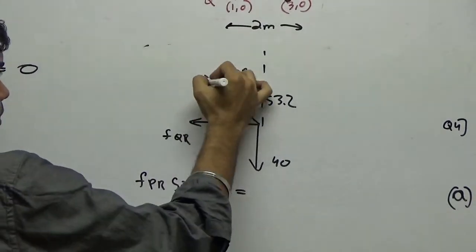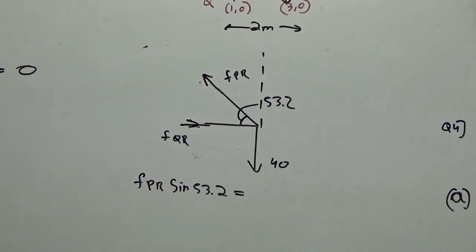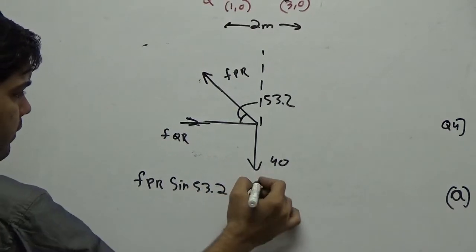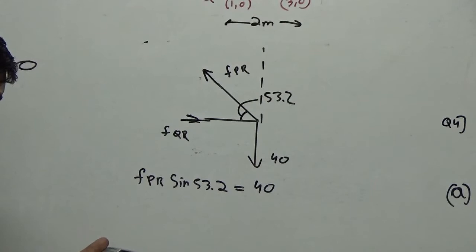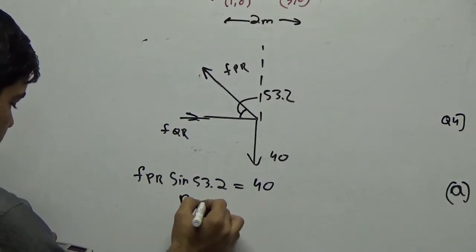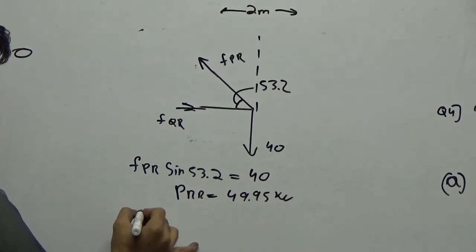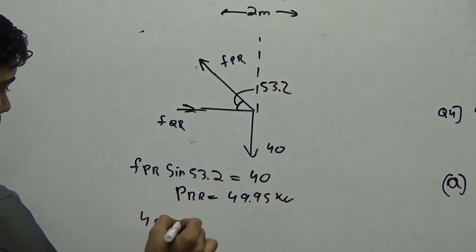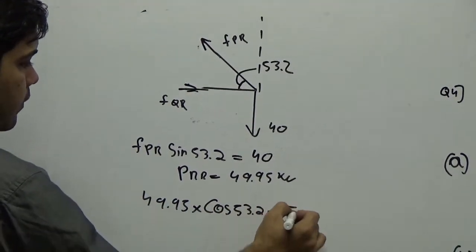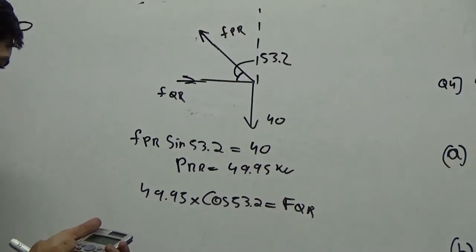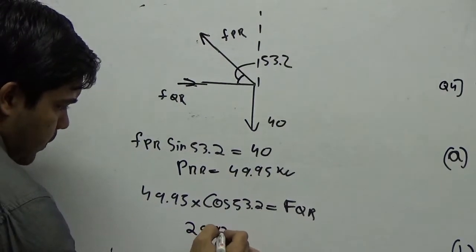So, I will take this as, just for my convenience, I am taking, changing the sign here. So, that I don't have to take a negative value there. FPR sin 53 will be equal to 40. So, 40 divided by sin 53.2 gives me FPR as 49.95 kN. And then, this is 49.95 into cos 53.2 is equal to FQR. So, into cos 53.13 gives you 29.97 kN.